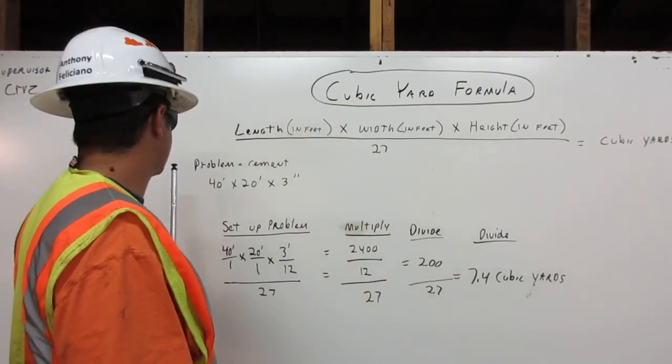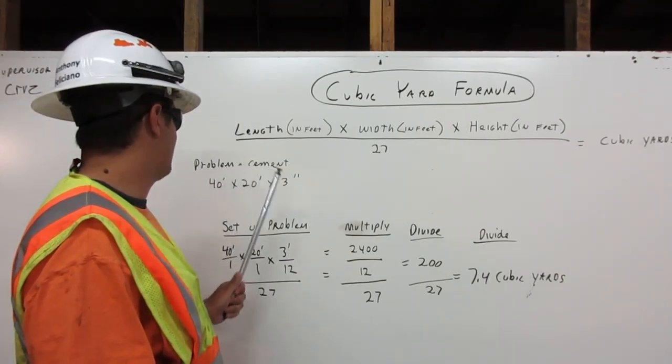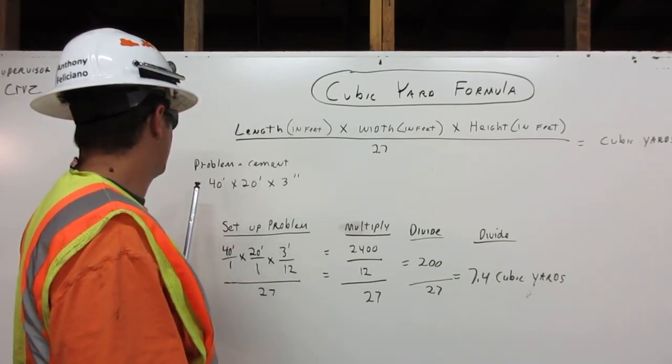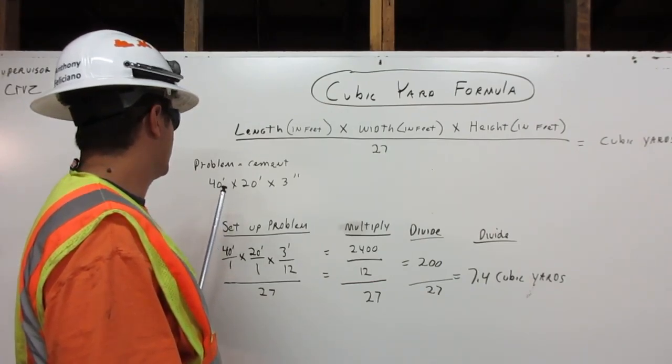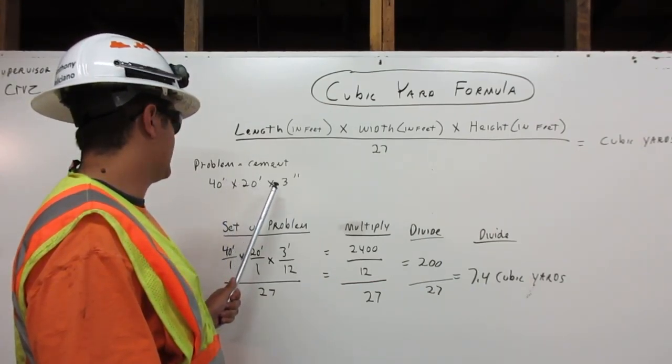For our example, our problem is a cement slab. It is 40 feet in length, 20 feet in width, and 3 inches thick.